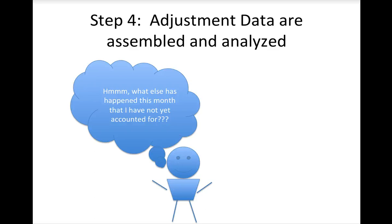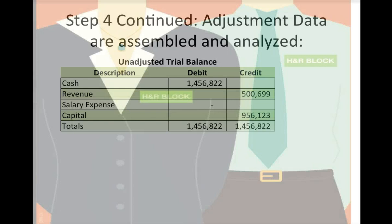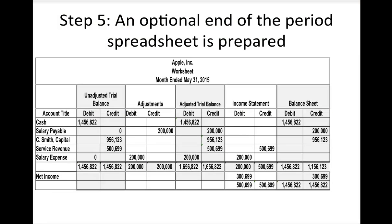Step four asks: what else has happened this month that I have not yet accounted for? If I look at my trial balance, I've got cash, revenue, and capital — but I haven't accounted for any salary expense. Looking at the picture behind the trial balance, those are H&R Block employees who have worked but have not yet been paid. That's one of the adjusting journal entries from chapter three. Using an optional spreadsheet, I can see my balance before the adjustment, then put in the adjustment — increasing salary payable and salary expense — and see what my balances will look like after this proposed adjustment, including what the income statement and balance sheet would show.